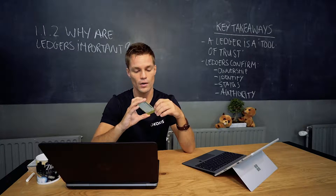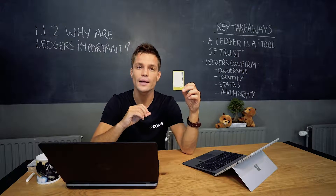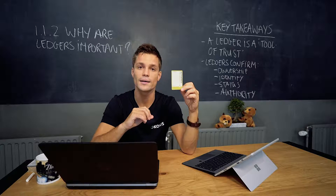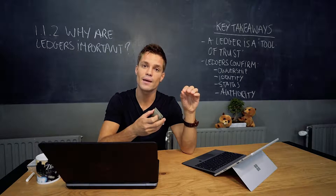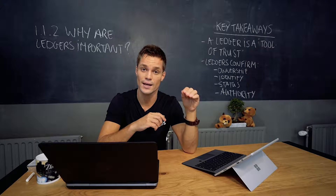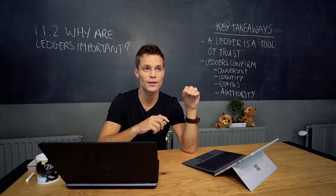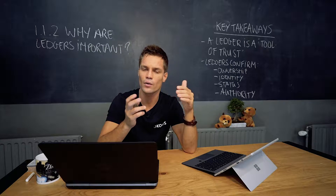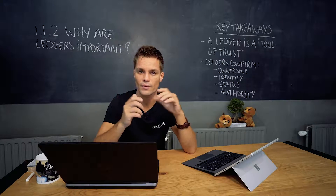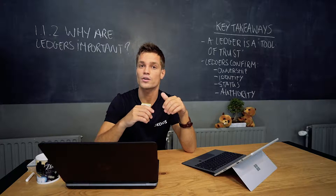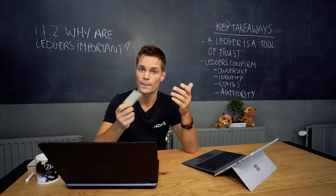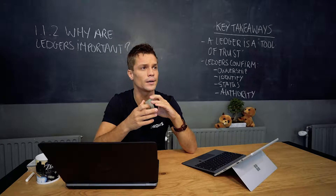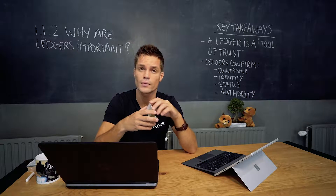Ledgers confirm ownership and they also confirm identity. Often in a ledger you have a unique ID — mine starts with 5-4 and ends with an 8. In the example of your friends, you identified them by their names. If two friends had the exact same name, you would likely use their last name or a letter. You recognize yourself in a ledger by your unique ID — for example, your phone number in the phone company record or your bank account number in the bank ledger.